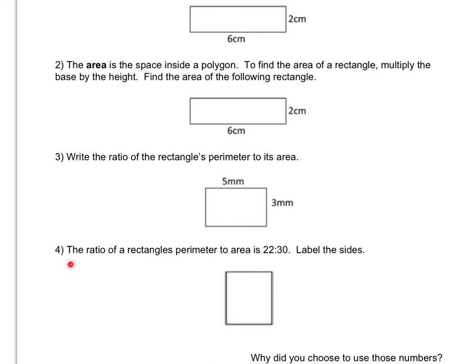Number 4 says the ratio of a rectangle's perimeter to area is 22 to 30. Label the sides. So here you're going to have to figure out two numbers that you multiply that equal 30, and that when you add them as a perimeter, since you'll have two A sides and two B sides, that they equal 22. So see if you can figure out what those two numbers are. If you want a hint, one of the sides has length 6.